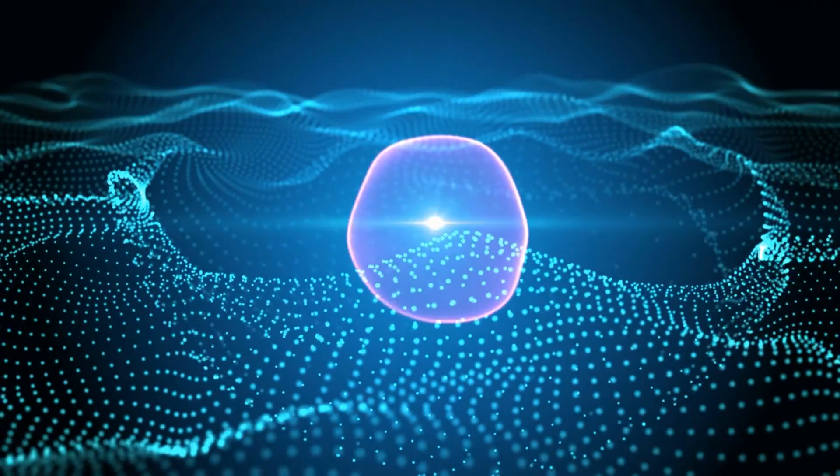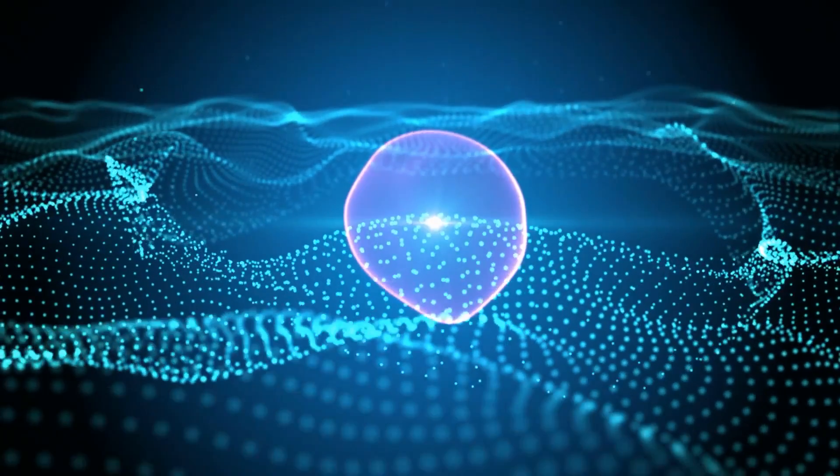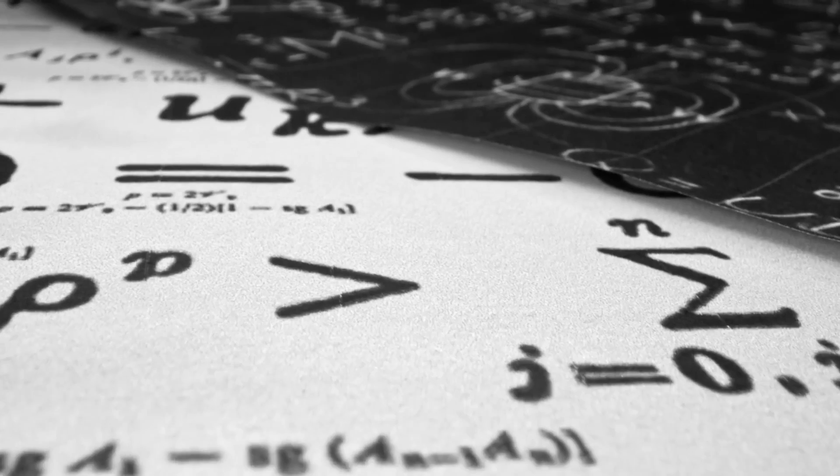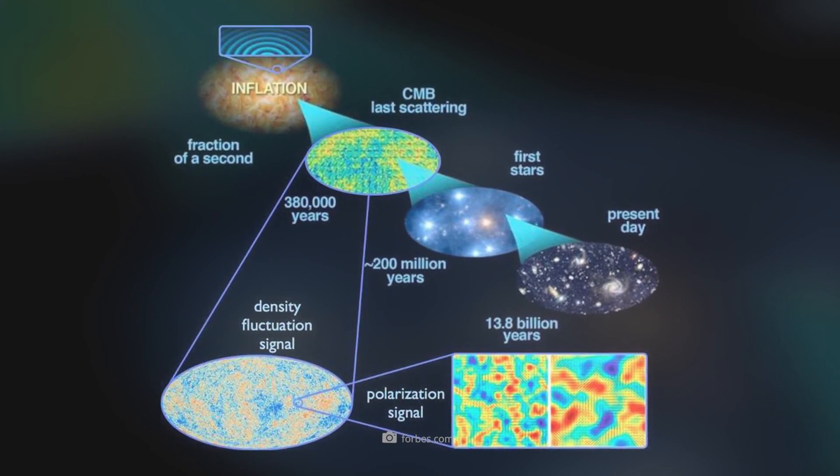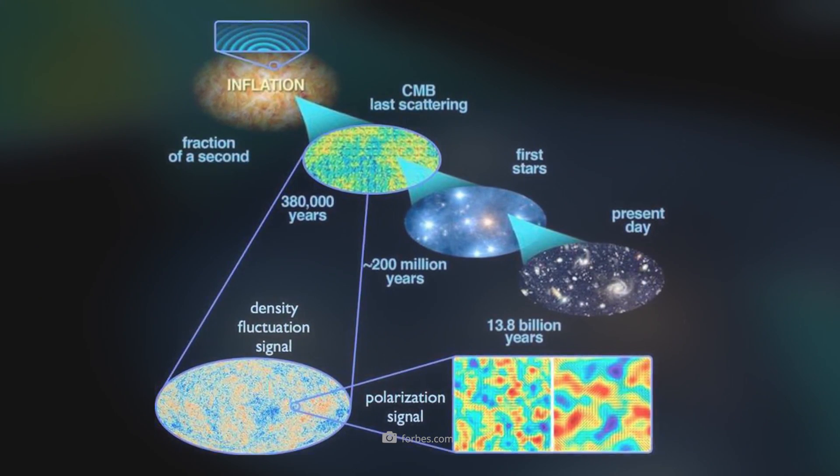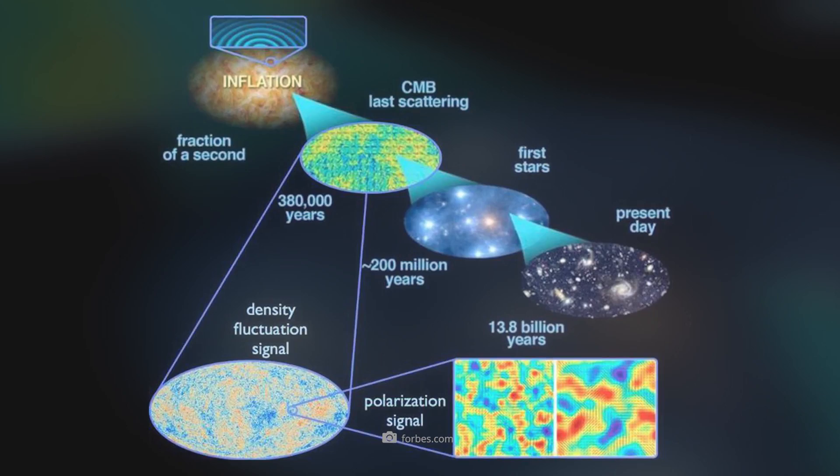And indeed, cosmological investigations currently suggest that the density parameter is about one. As already mentioned, this would mean in the reverse conclusion that the universe has an almost flat form.